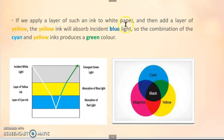If we apply a layer of such ink to white paper and then add a layer of yellow, the yellow ink will absorb the incident blue light. So the combination of cyan and yellow ink produces a green color. Here in this image, we can see here is the layer of cyan ink, layer of yellow ink. When incident white light comes, the yellow ink absorbs the blue light and the cyan ink absorbs the red light. The emergent green light is produced by the combination of cyan and yellow ink, which produces green color.